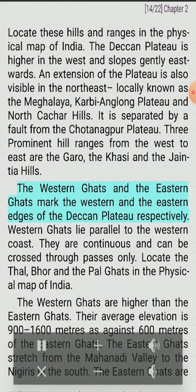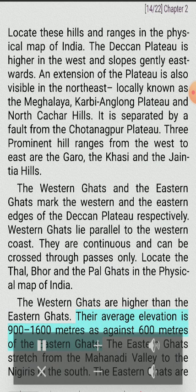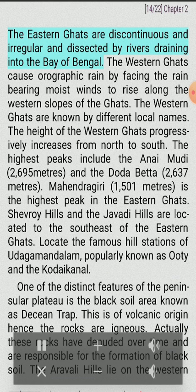The Western Ghats and the Eastern Ghats mark the western and eastern edges of the Deccan Plateau respectively. Western Ghats lie parallel to the western coast and are continuous, crossable only through passes. The Western Ghats are higher than the Eastern Ghats, with an average elevation of 900 to 1,600 meters as against 600 meters of the Eastern Ghats. The Eastern Ghats stretch from the Mahanadi Valley to the Nilgiris in the south, and are discontinuous and irregular, dissected by rivers draining into the Bay of Bengal. The height of the Western Ghats progressively increases from north to south.